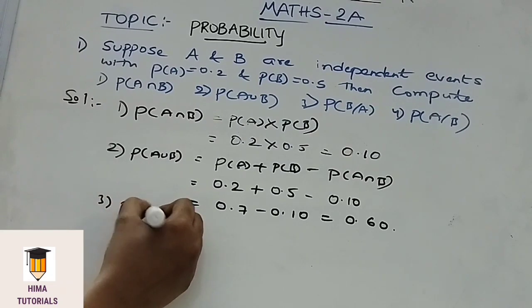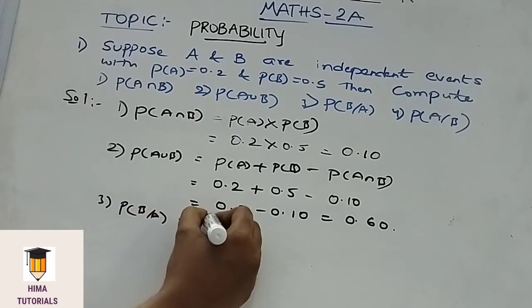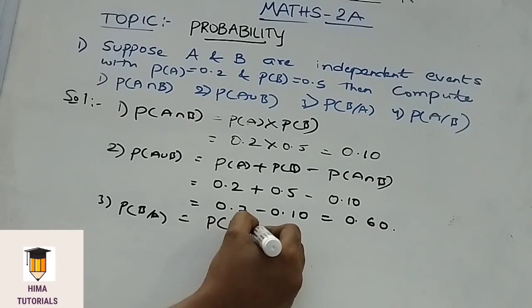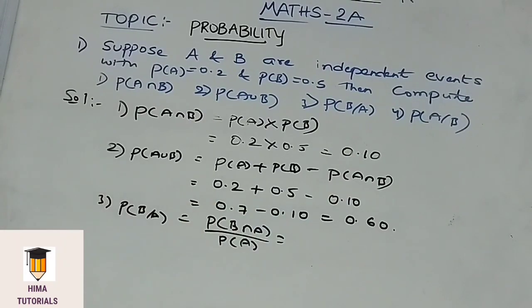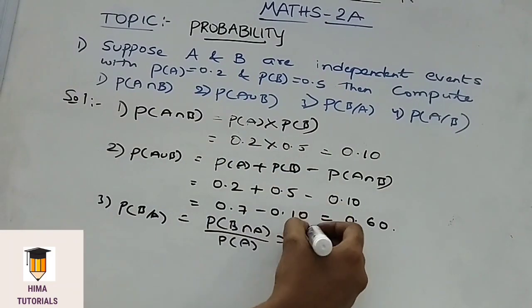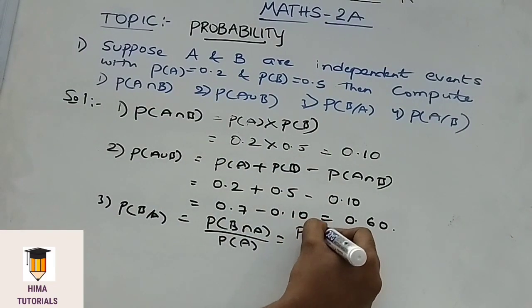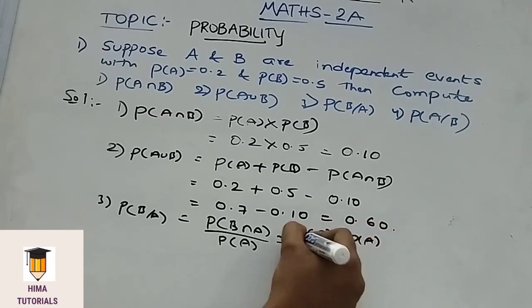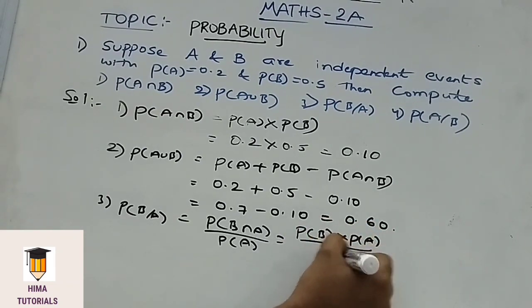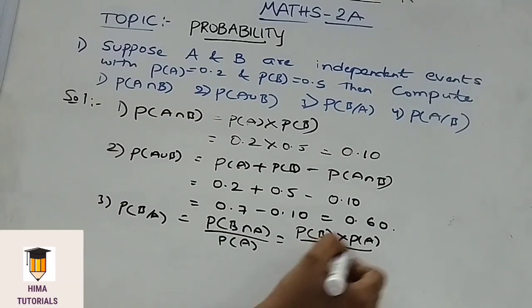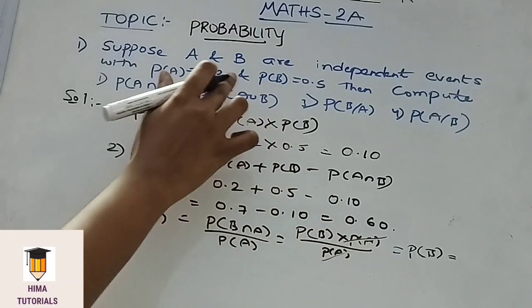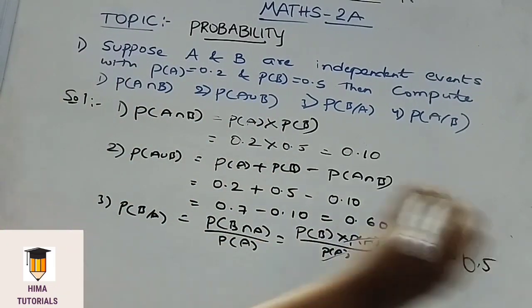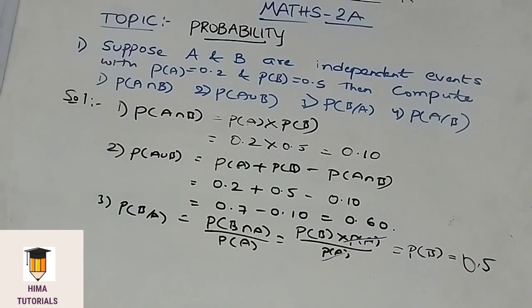Now coming to P of B given A. P of B given A means P of B intersection A by P of A. If A and B are independent events, then P of B intersection A is written as P of B into P of A, divided by P of A. The P of A terms cancel, giving us P of B, which is 0.5. So P of B given A is 0.5.